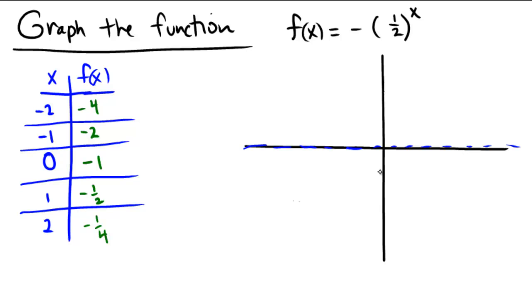So that gives me a convenient set of values that I can now plug in and be able to draw my graph. Okay, so 0 gave me negative 1. Do that one right there. 1 gave me negative 1 half, so I'll have to go in there. 2 gave me negative 1 fourth.